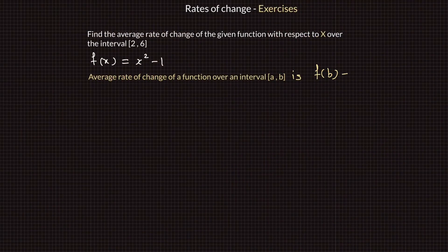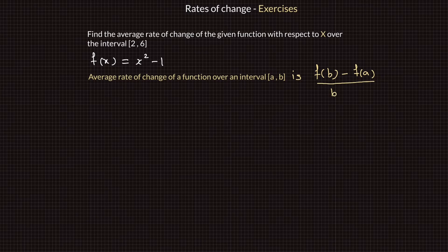The average rate of change of a function f of x over a closed interval a comma b is f of b minus f of a divided by b minus a.